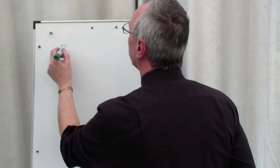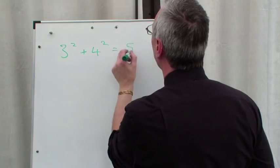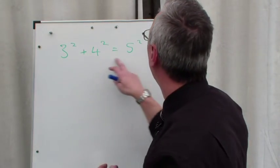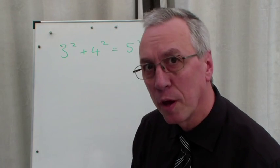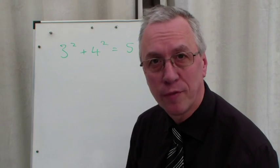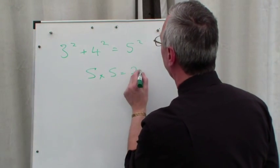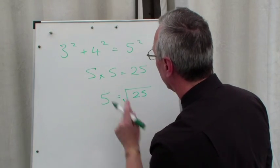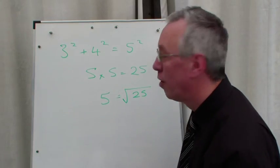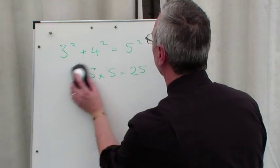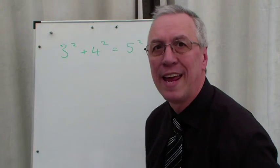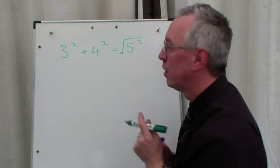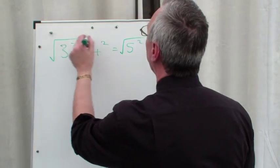So I'll just rewrite that out now. 3 squared plus 4 squared equals 5 squared. Now, this is where I'm looking at the rule of transposition when it comes to squares. So the opposite of a number squared, 5 times 5, would be the square root of the answer. 5 times 5 is 25. So 5 on its own is the square root of 25. The opposite of a number squared is to square root that number. So in order to get 5 on its own here, I would need to square root it. What I do to one side, I must do to the other. So I must square root that side as well.